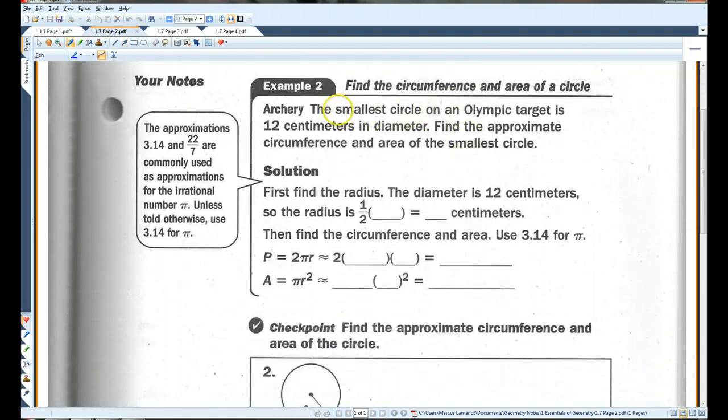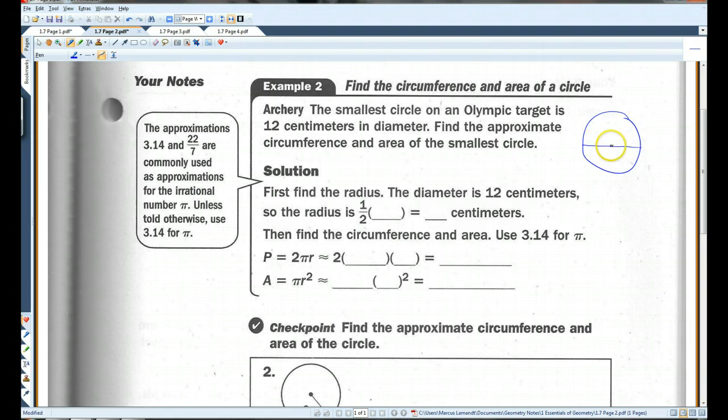Example 2, the smallest circle on an Olympic target is 12 centimeters in diameter. Find the approximate circumference and area of the smallest circle. So, we have this circle that is 12 centimeters in diameter. Now, diameter is the distance all the way across the circle. So, if the whole thing is 12, this has got to be 6 and 6, which means the radius is 6, 6 centimeters.